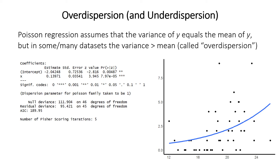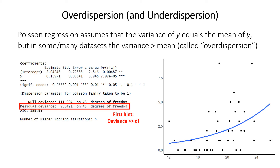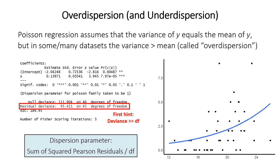In many real datasets the variance is often larger than the mean, and that's called over dispersion. It's also possible, though less common, for the variance to be much less than the mean — that's called under dispersion. Your first clue in the model output is if the residual deviance is much bigger than the degrees of freedom. The dispersion parameter is actually calculated as the sum of the squared Pearson residuals divided by the degrees of freedom. You should always check this after running a Poisson regression, especially if the residual deviance is quite different from the degrees of freedom.